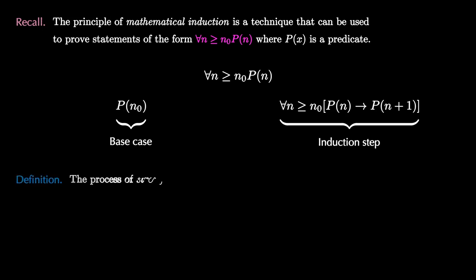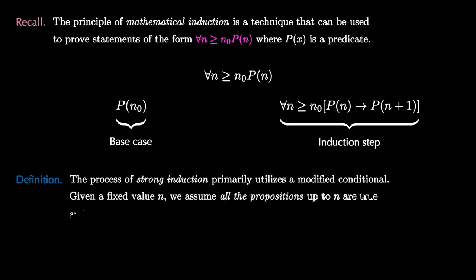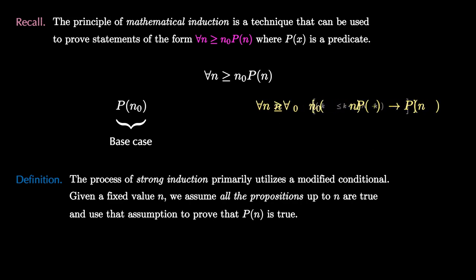The process of strong induction is similar, but it utilizes a modified conditional statement. In particular, given a fixed value of n, we assume that all the propositions up to n, but not including n, are true, and we use this assumption to prove that P(n) is true.